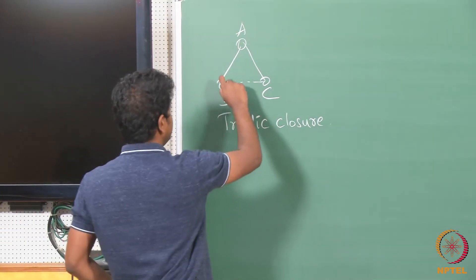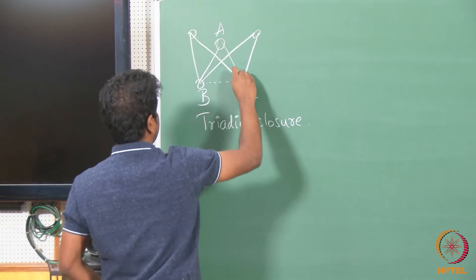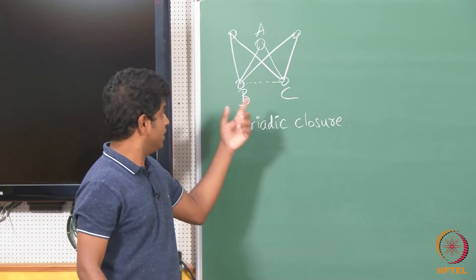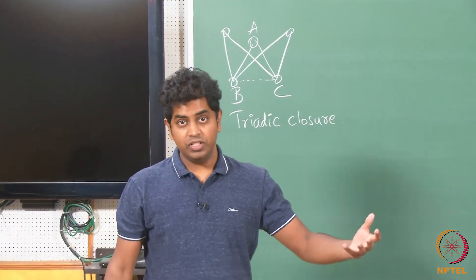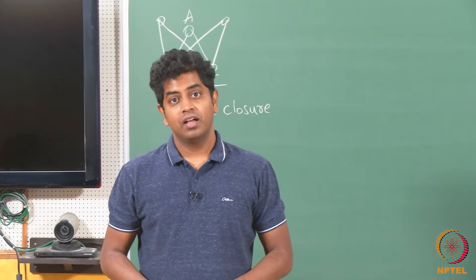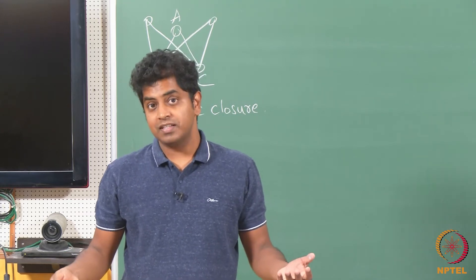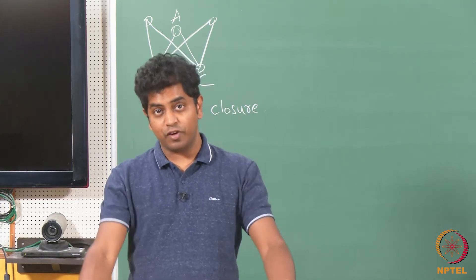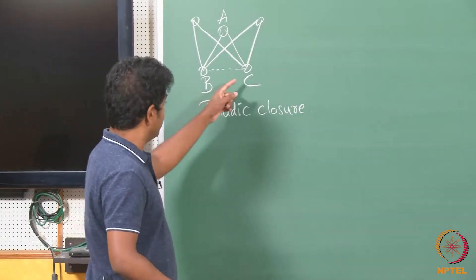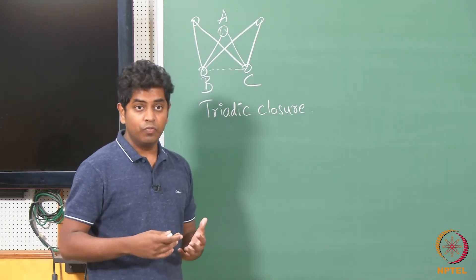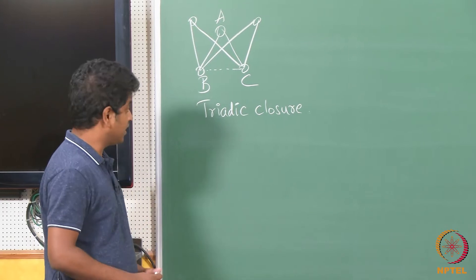What if there are many such common friends? Do you think the pressure increases for B and C to become friends if there are a lot of common friends? Two people discussing that they should probably become friends simply because they have a whole lot of common friends. What does 'a whole lot of common friends' mean? There is a piece of research that answers this question.